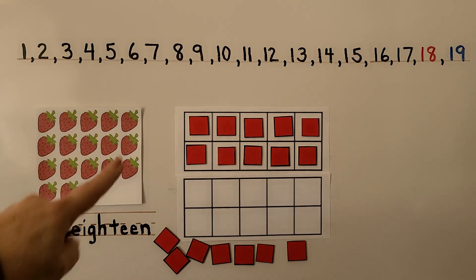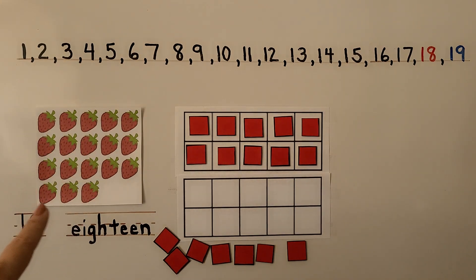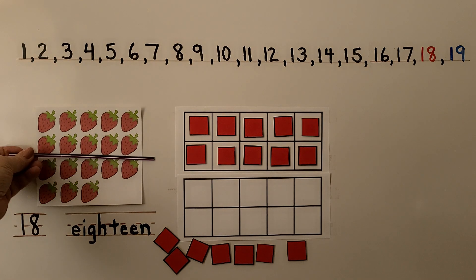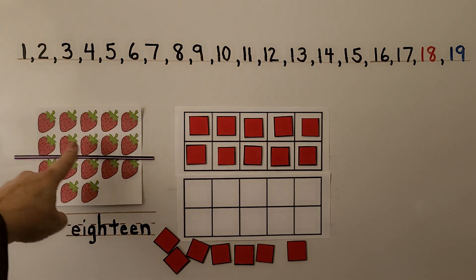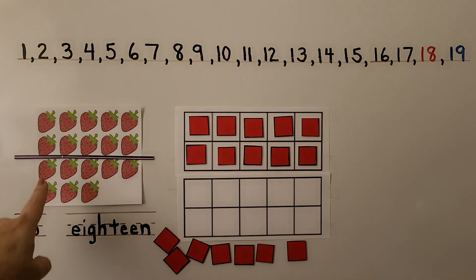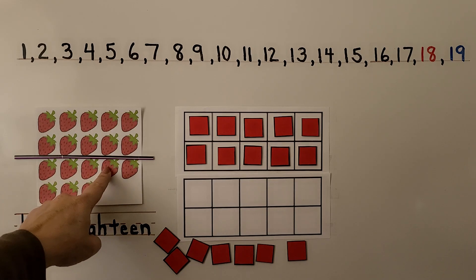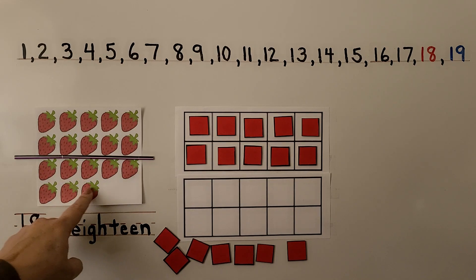Here we have some strawberries. There are 18 strawberries. We can see, if we put a line here, there is a set of 10 strawberries and 1, 2, 3, 4, 5, 6, 7, 8 more.